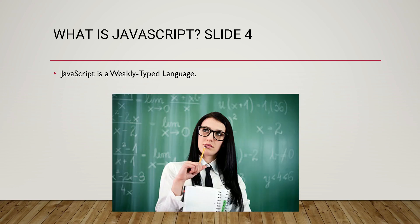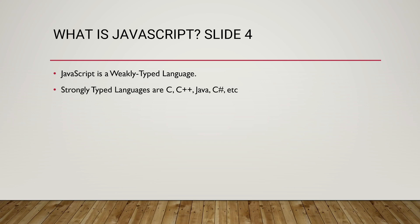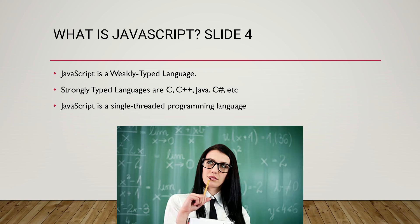JavaScript is a single-threaded programming language. In contrast, C++, Java, and C# are strongly-typed and multi-threading programming languages. Understanding single-threaded versus multi-threaded languages is important and often comes up in interview questions.